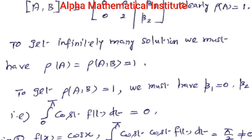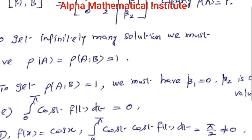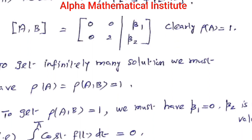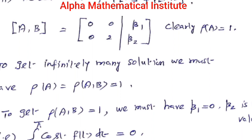The augmented matrix (A|b) is [[0, 0, β1], [0, 2, β2]]. From this, rank(A) = 1. To get infinitely many solutions we need rank(A) = rank(A|b) = 1. For rank(A|b) = 1, we must have β1 = 0. When β1 = 0, the ranks are equal and equal to 1, so the system has infinitely many solutions regardless of the value of β2.